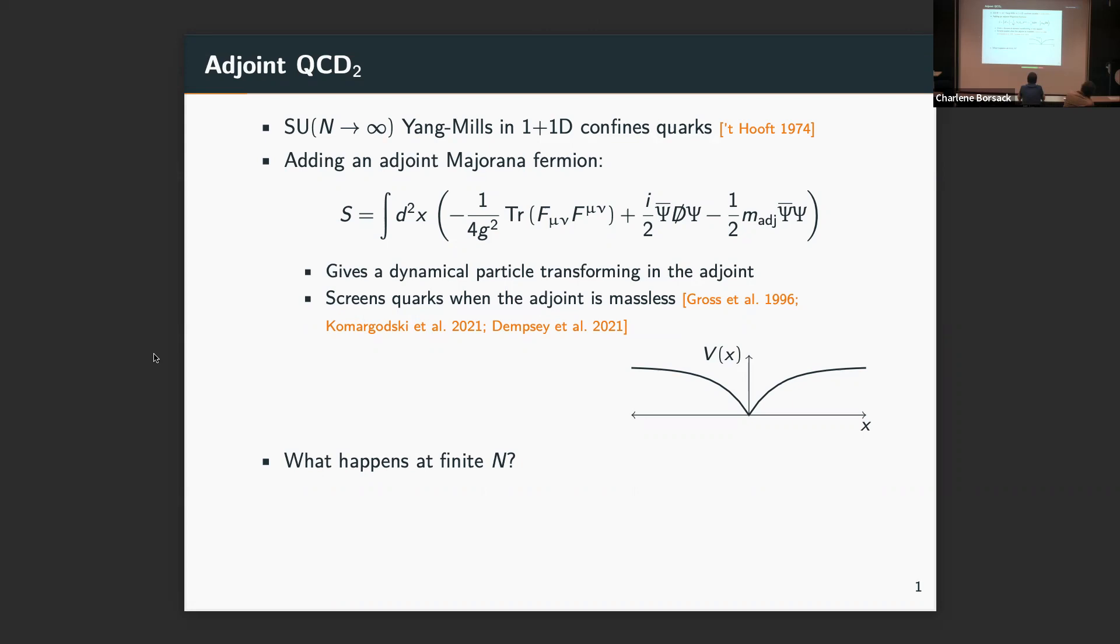This has been revisited in some recent work, including some work we did using DLCQ, discrete light cone quantization, to study the spectra of these theories. So we might ask, can we take the next step to make it even a bit more physical by dropping the large N assumption and going down to finite N? This was actually also considered back in the 90s, and DLCQ does work in principle. But as I'll show you, it's actually a bit harder than it looks.